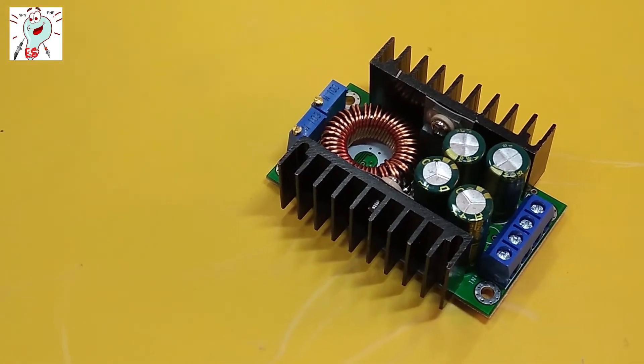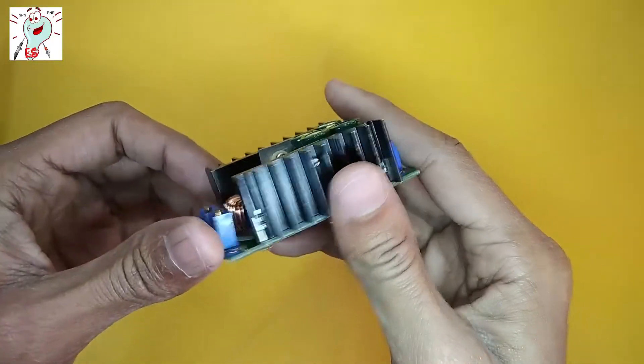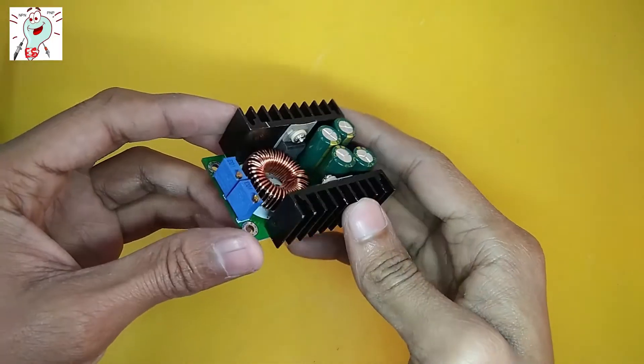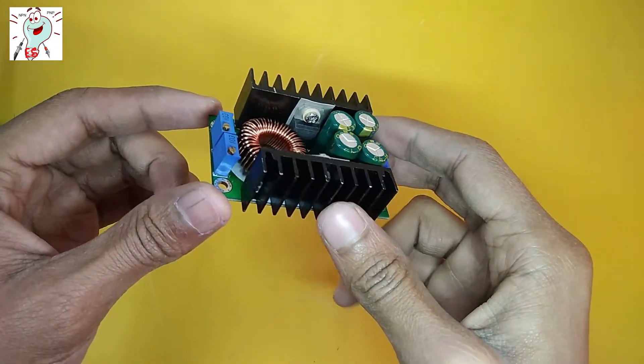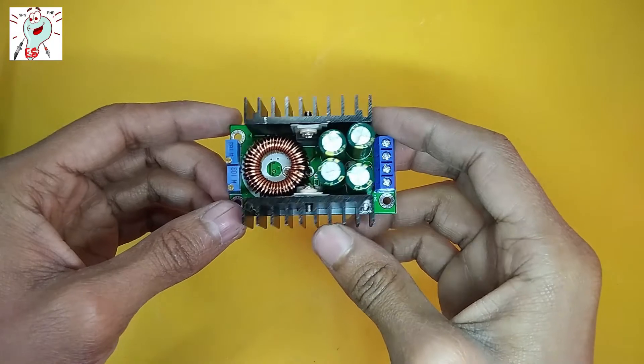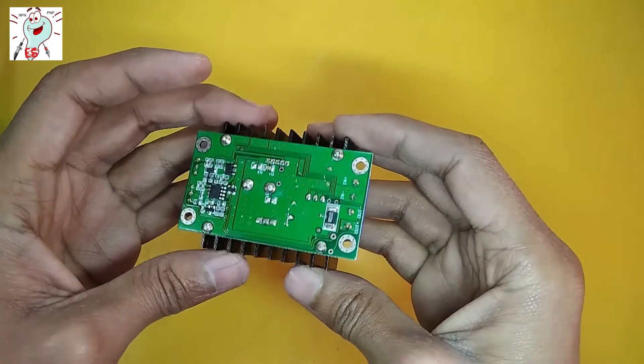By rotating this variable resistance we can easily adjust the output voltage. That means if we rotate the variable resistance then we can increase or decrease the output voltage according to input voltage.